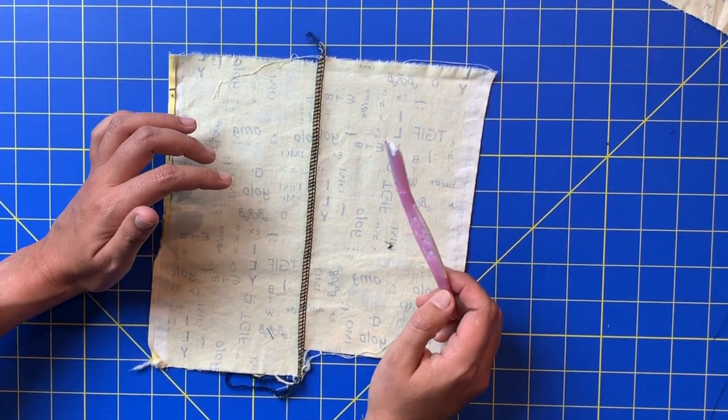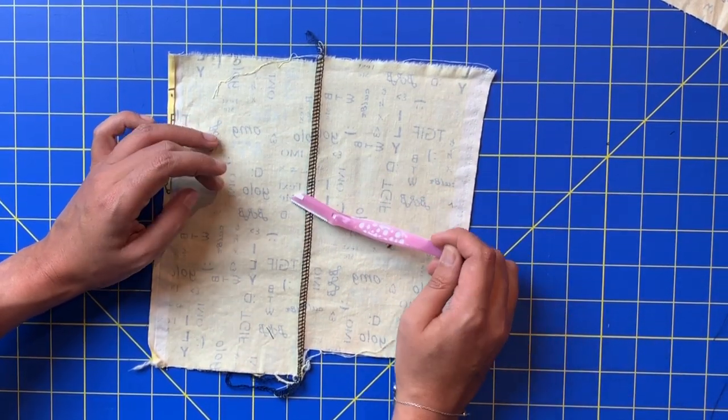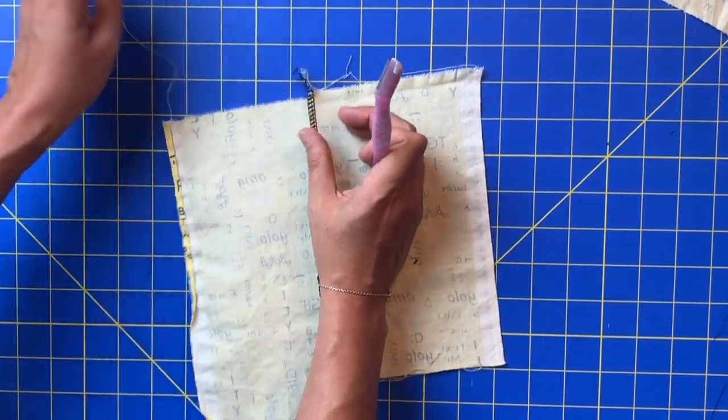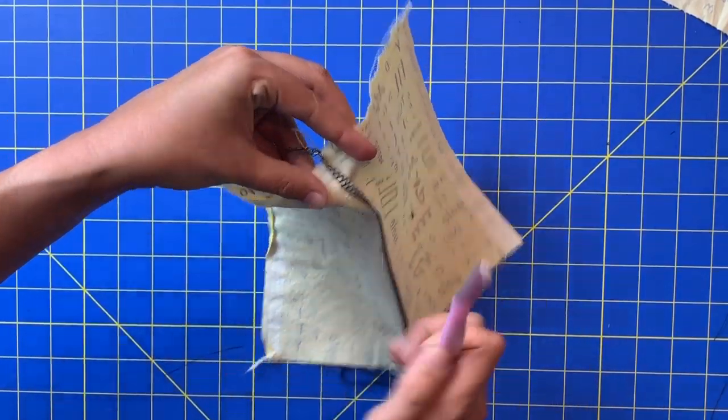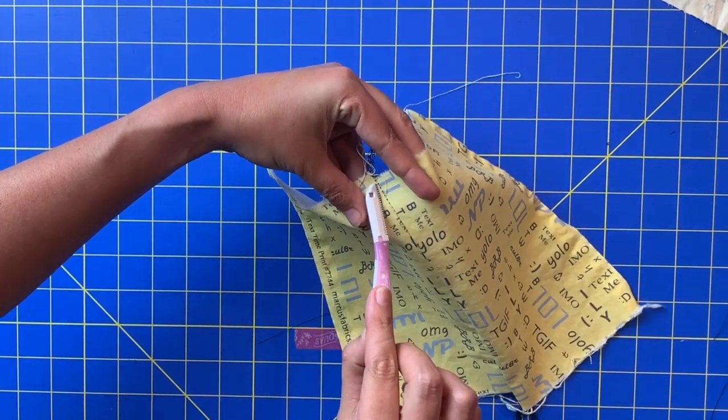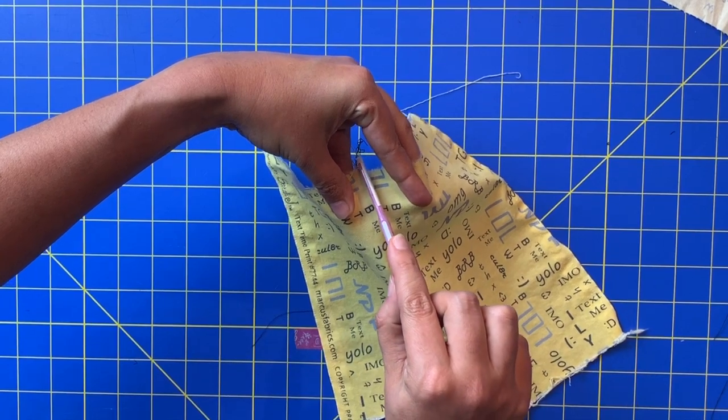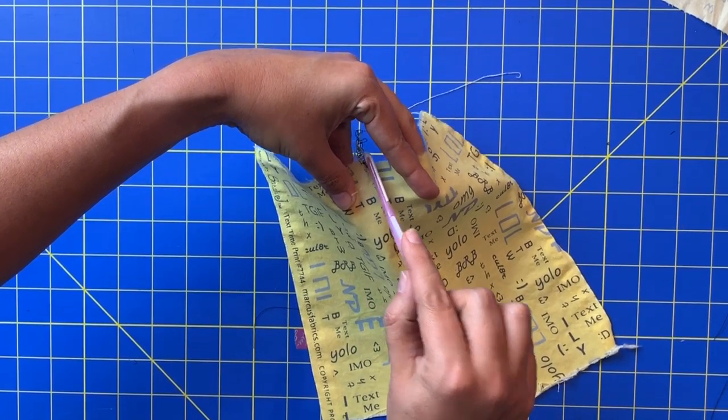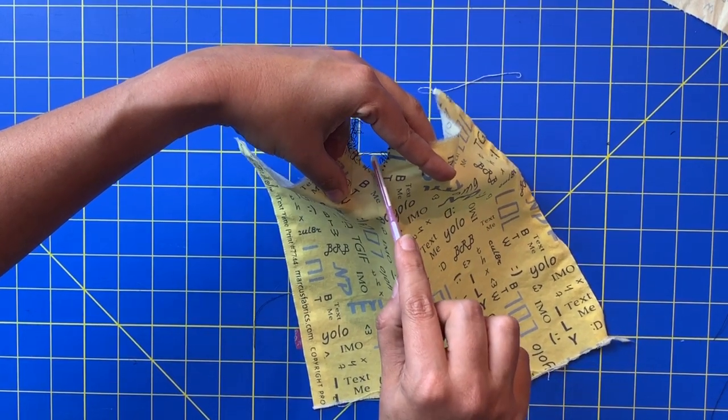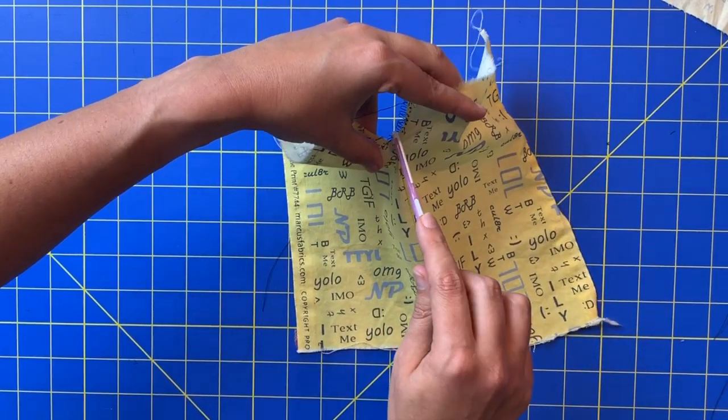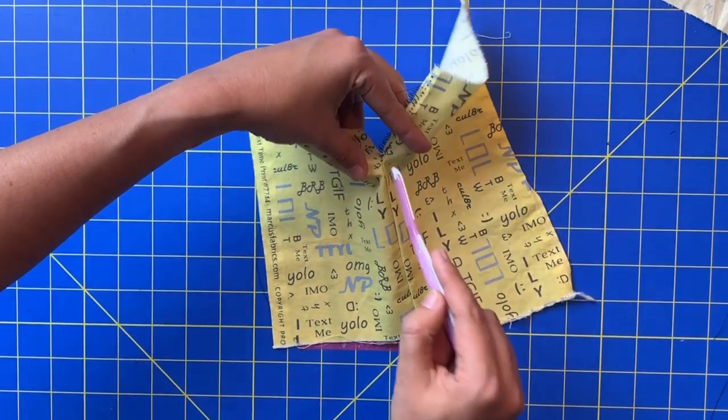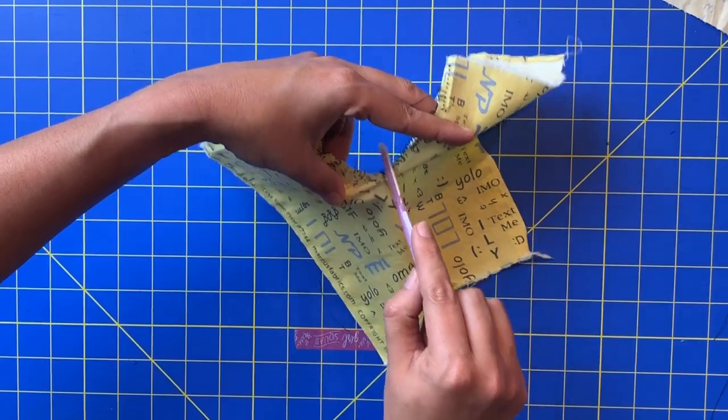So then I thought why not try the seam remover on serger stitches as well. I love it so much for the sewing machine stitches so why not try it here as well. And lo and behold I came up here right side up and you can see all those threads are exposed and I just started sawing gently barely putting any pressure on and eventually it gets going and you're able to quickly and easily cut through all of those layers of threads all at once.